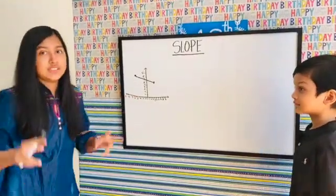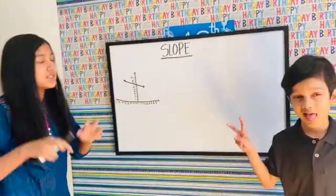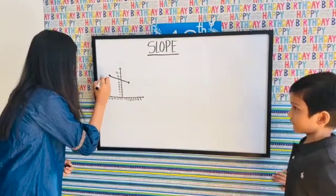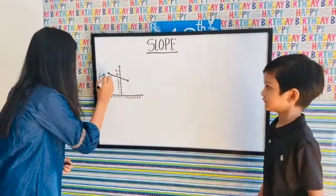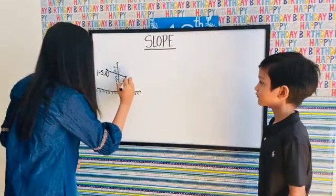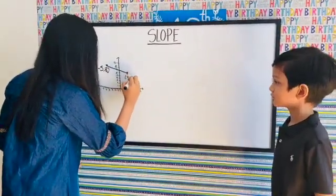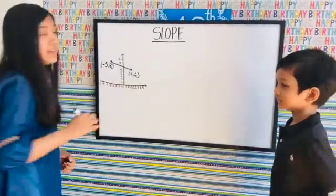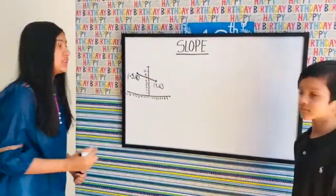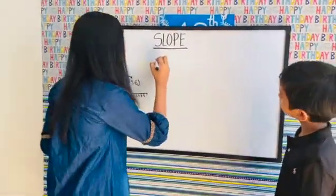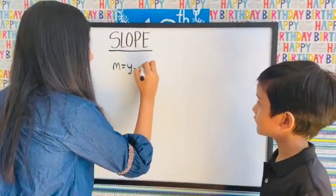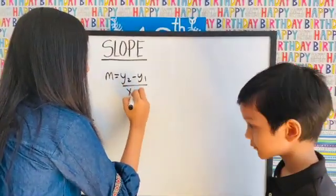So these are coordinates, or we can say points. The coordinates are negative 5 comma 8, and here the coordinates are 4 comma 6. Now we gotta learn the slope formula. The slope formula is m equals y2 minus y1 over x2 minus x1.